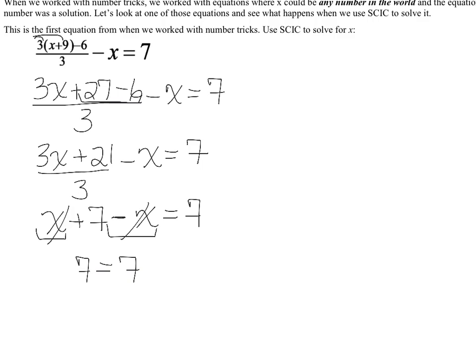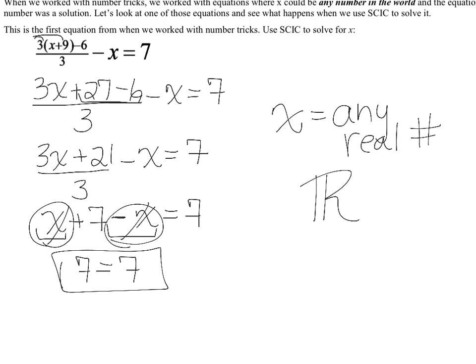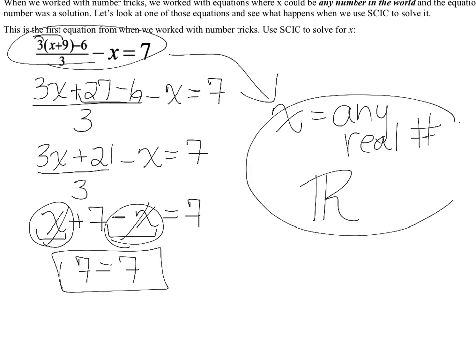Remember, this was a number trick where every single person picked any number, plugged it in, and everybody got 7. So when variables cancel out completely and you're left with a true statement, x is any real number. There's a symbol for that — it looks like an R with an extra line — which represents all real numbers. The solution to this equation is all real numbers.